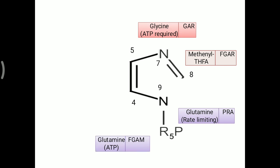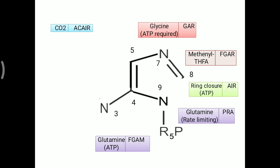Further, one more nitrogen will be added, requiring ATP again — with the help of glutamine, adding one more nitrogen to the purine ring structure. Then one ring closure will occur, also requiring ATP. This finally makes AIR, aminoimidazole ribonucleotide.